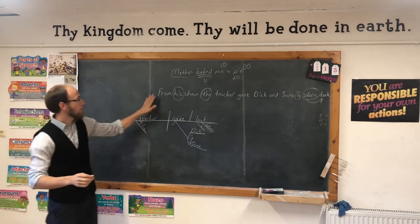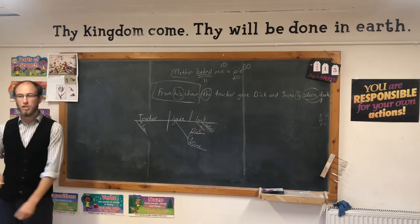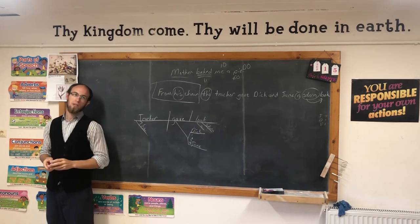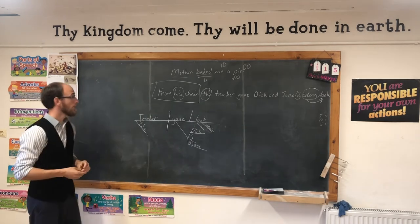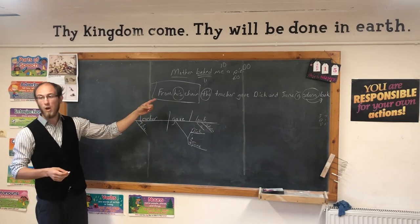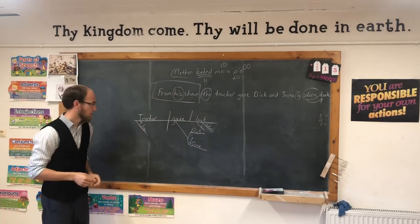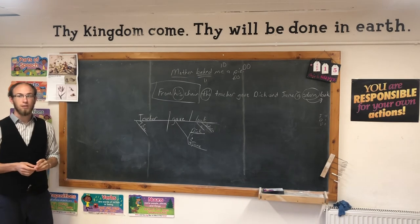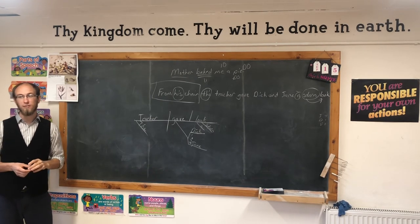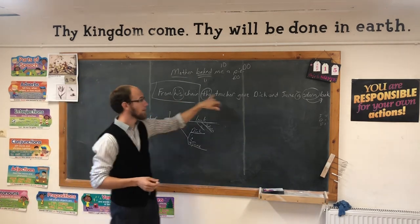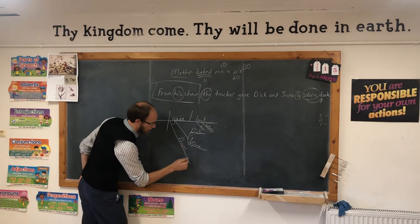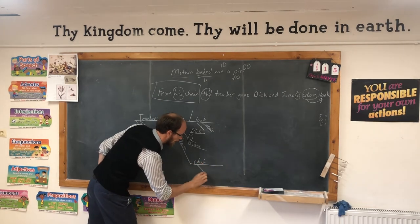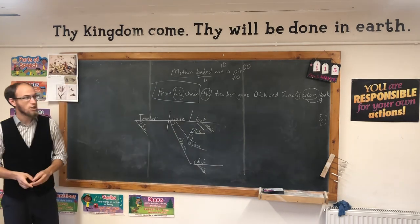What do we have left? 'From his chair.' Is this an adjective or an adverb phrase? It's telling where—so it's an adverb phrase. Since it's an adverb, it modifies the verb: gave. It's where the teacher gave from. So we put 'from' on a slanted line below the verb, 'chair' on the horizontal line, and 'his' modifying chair.